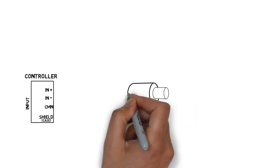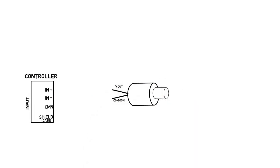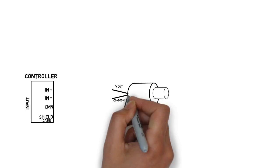Let's say we have a pressure sensor with an analog voltage output, a common that the voltage is referenced to, and power.